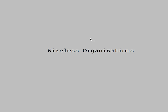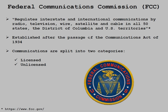The final thing we'll talk about today is the wireless organizations you should be familiar with. The FCC is the one that actually allocates all of the different frequency ranges and values. If you need to get licensed to use a certain frequency range, the FCC is the organization you would submit that to. They maintain a big chart showing all of the frequency allocations for the entire country.